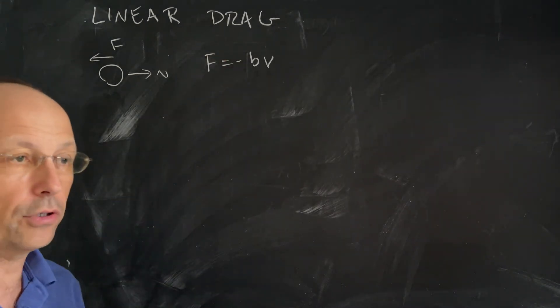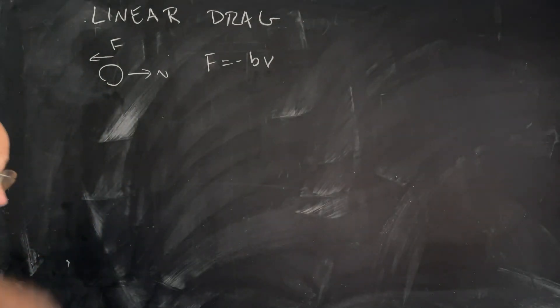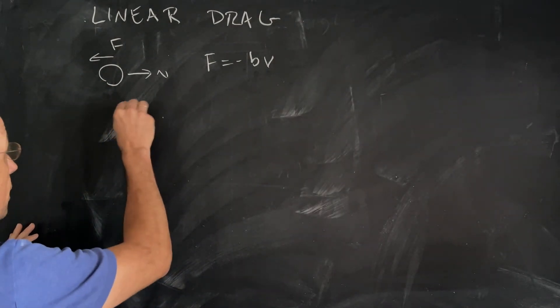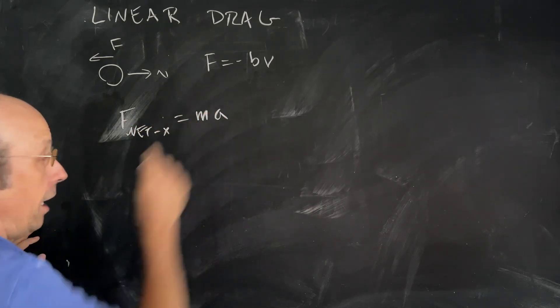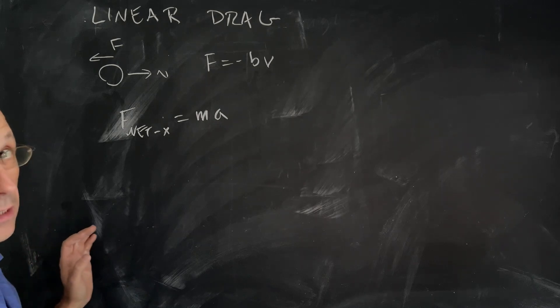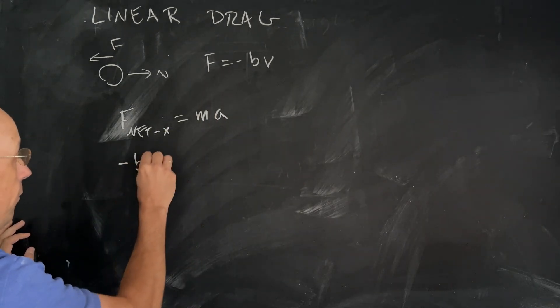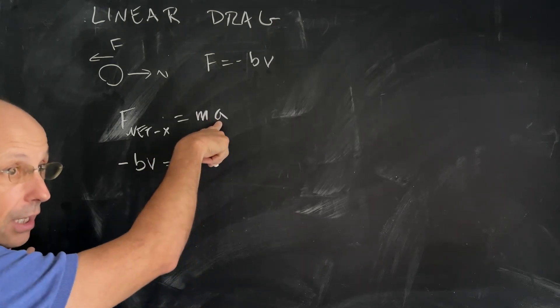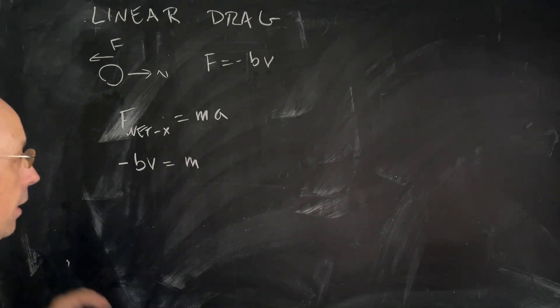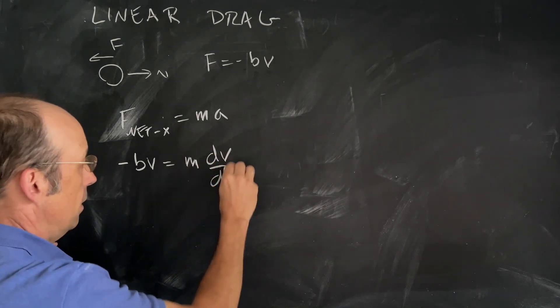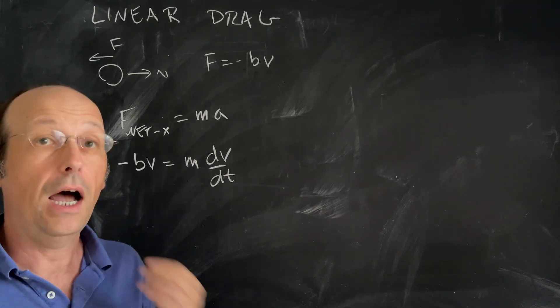So how do we model the motion of this? This is a one-dimensional problem. I'm not going to write vectors because we don't have to. Let's write down Newton's second law. Newton's second law says that the net force in the x direction is mass times acceleration. I'm going to write the acceleration as A. The force is negative BV, and that's mass times acceleration. Since I have velocity here, I'm going to write acceleration as the derivative of velocity, dv/dt. There I have it, a differential equation.